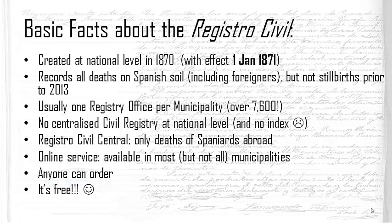This is crucial to understand, because if you want to order the death certificate of an ancestor who lived and died in Spain, you have to know where that person died — or more precisely, where that person's death would have been recorded. This can be quite a big challenge, as we don't always know where our ancestors died. They may have lived somewhere but died while travelling or working somewhere else.